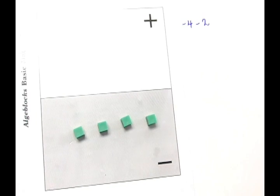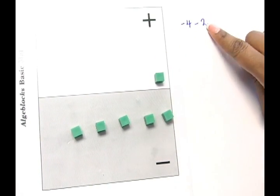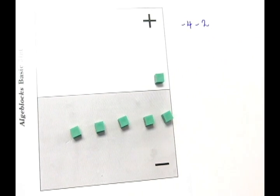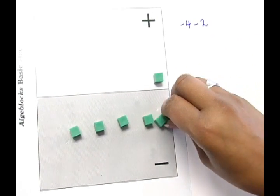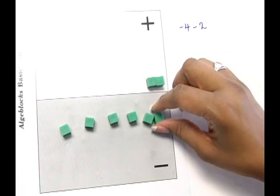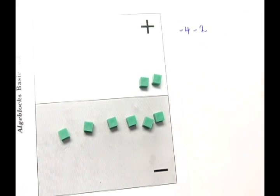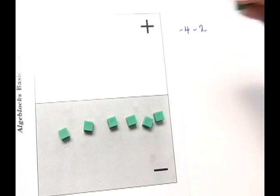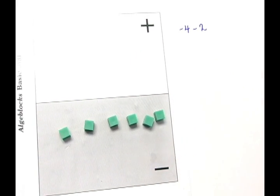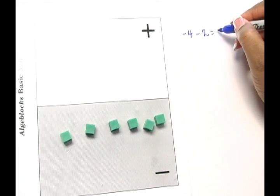So they realize that if they add one zero pair here, they're getting very close to taking away 2. All it takes is one additional zero pair and now we have enough to take away our positive 2. If we remove the positive 2 from the mat, then we're left with negative 6.